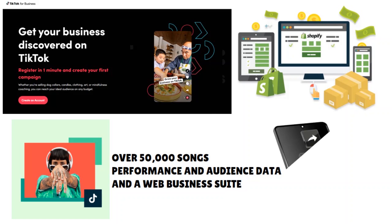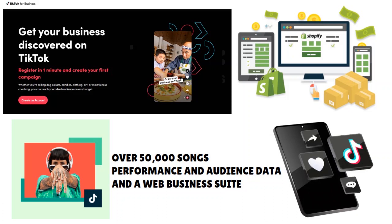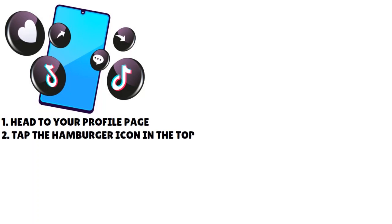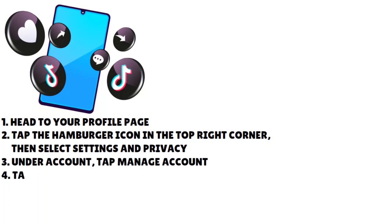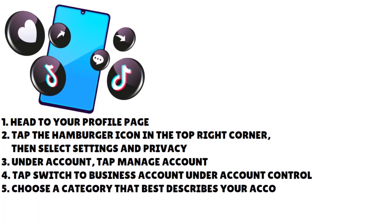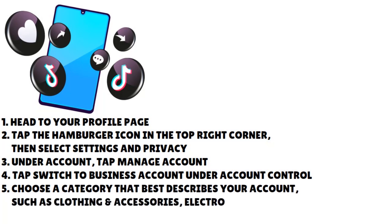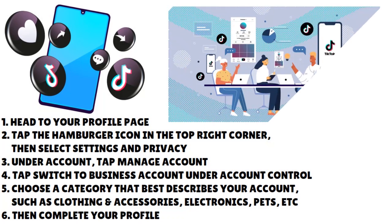Setting up a TikTok business account is very easy. Download the TikTok app — you can also access the platform from your desktop if you're not a smartphone user. Register for an account, then head to your profile page, tap the hamburger icon in the top right corner, select Settings and Privacy, and under Account tap Manage Account. Tap Switch to Business Account under Account Control, then choose a category that best describes your account — such as clothing and accessories, electronics, pets, or fitness. Once done, click Complete and finish your profile.